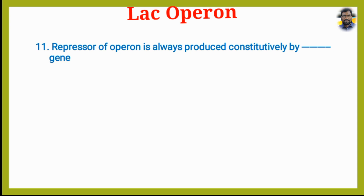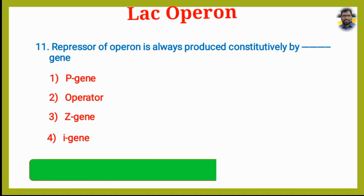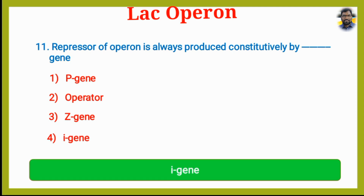The repressor of the operon is always produced constitutively by which gene? Option A: P Gene. Option 2: Operator. Option 3: Z Gene. Option 4: I Gene. The answer is Option 4, the I Gene, which is also called the Regulator Gene.